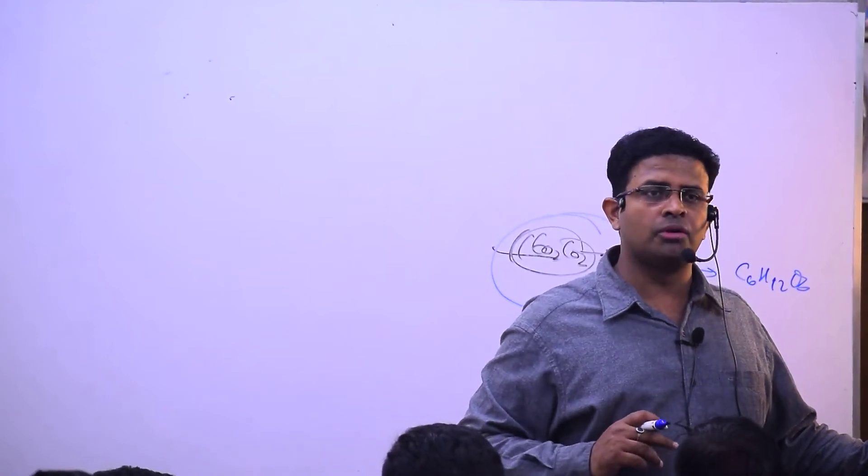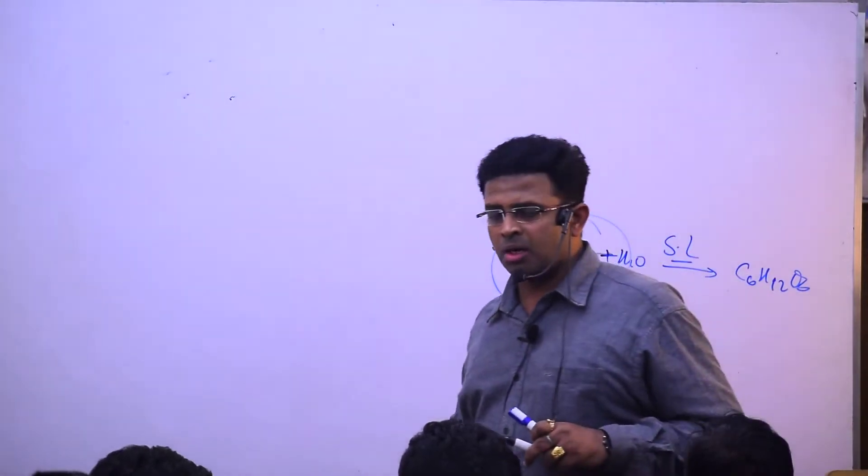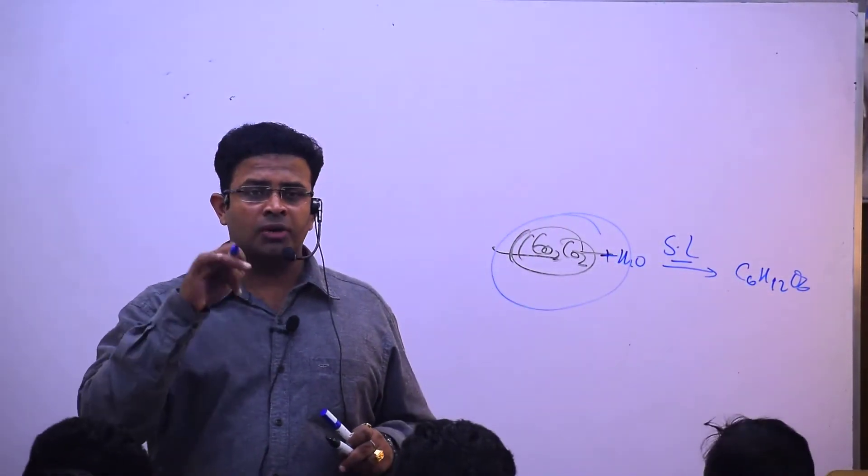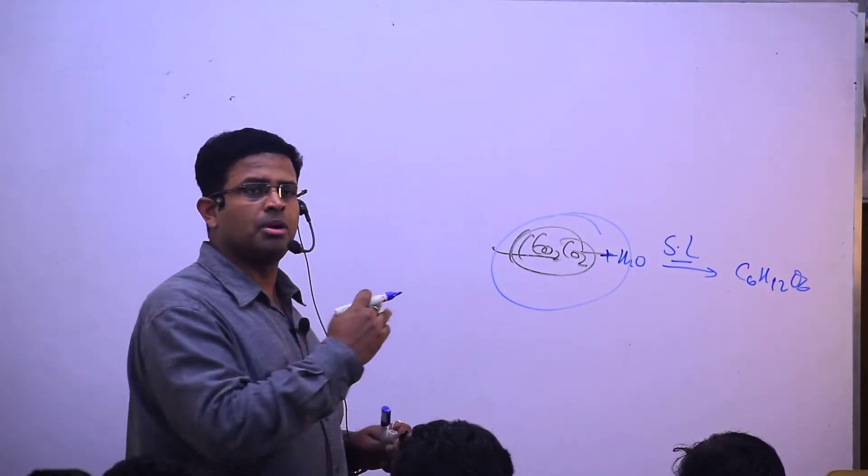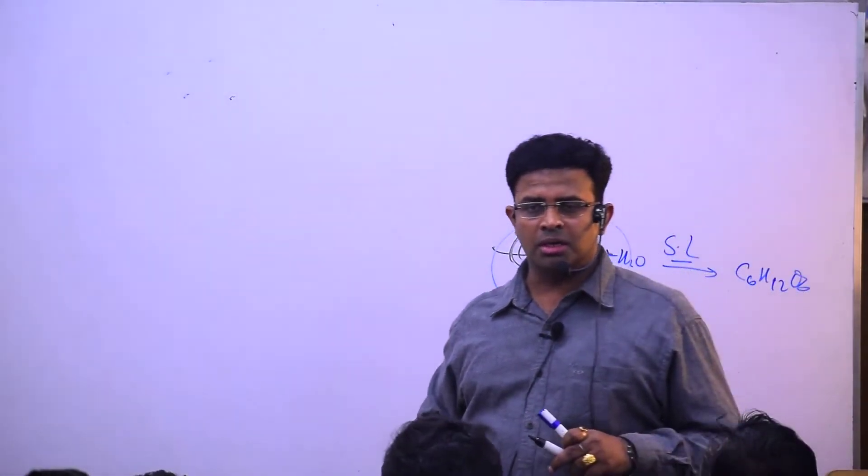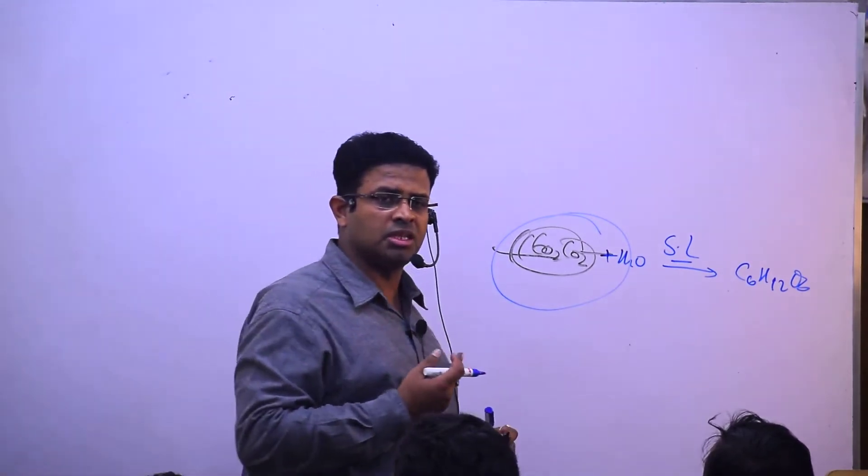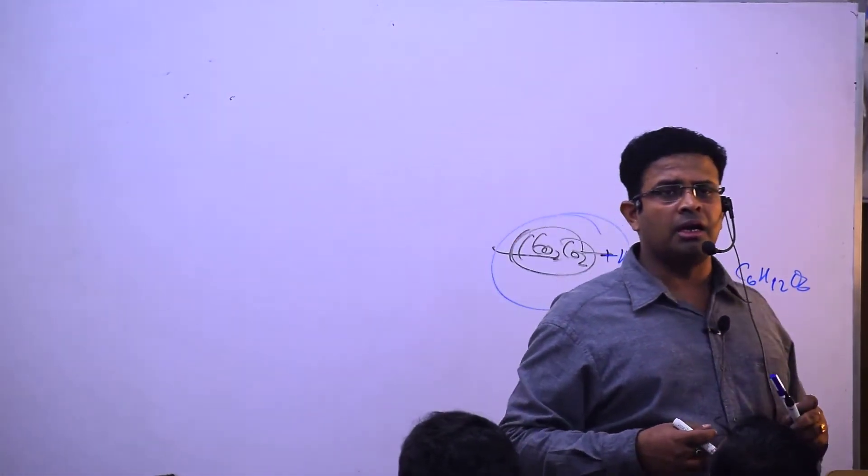Less intensity of light causes death of plants because of accumulation of carbon dioxide - the plant is not able to synthesize. We have seen which two colors are very important for photosynthesis: blue and red.